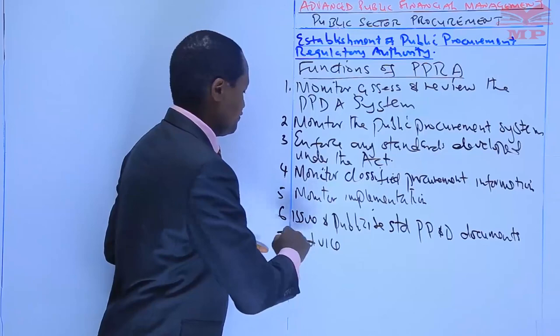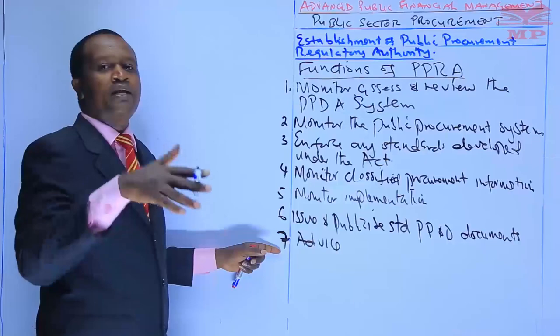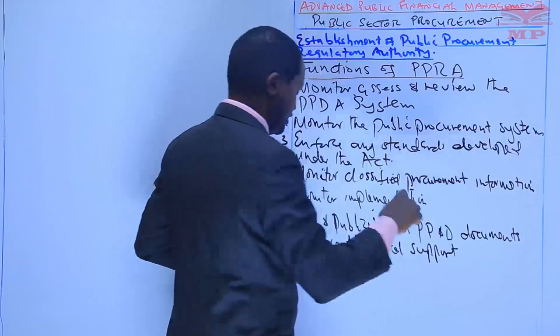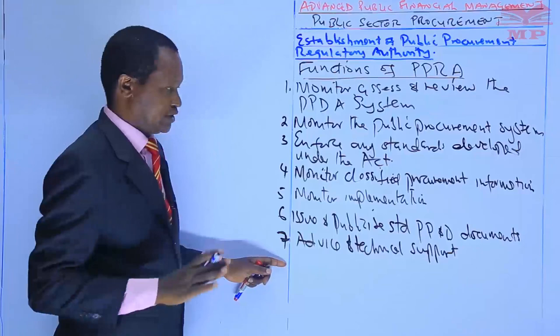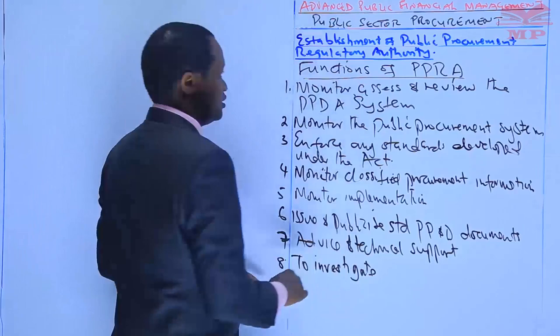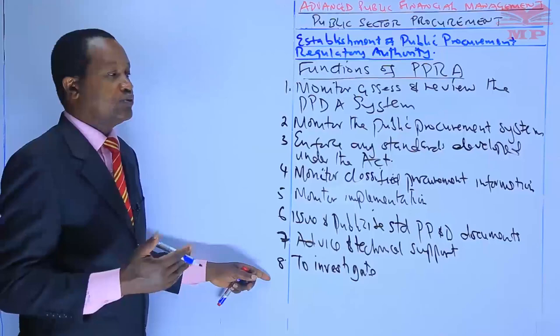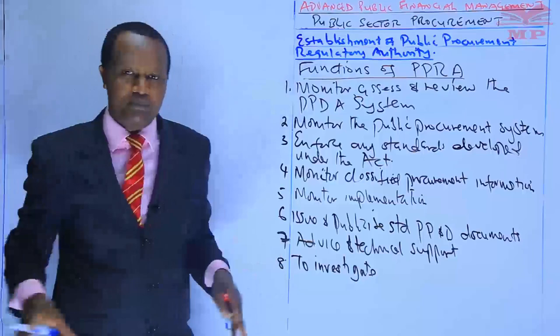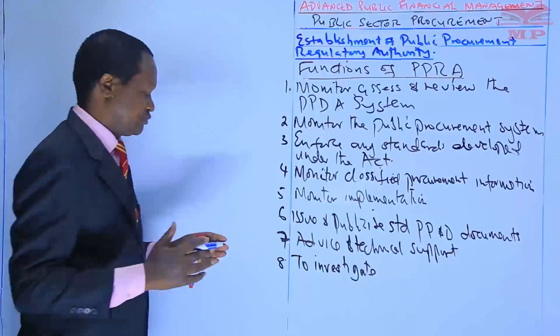Function seven is to provide advice and technical support upon request. Function eight is to investigate and act on complaints received on procurement and asset disposal proceedings from procuring entities, from tenderers, from contractors, or even from the general public — for matters that are not subject to administrative review.